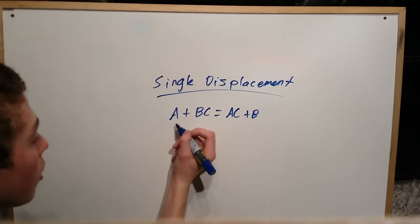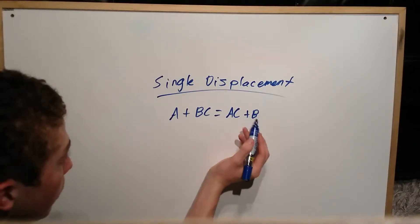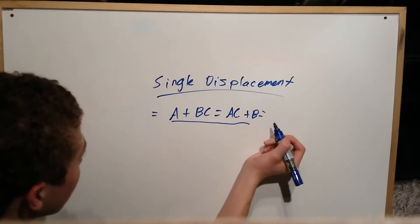So we have one element and one compound, and then we have one compound and one element. So it's the exact same on both sides. This is equal to this.